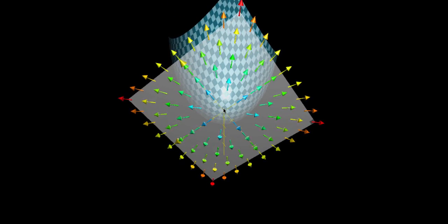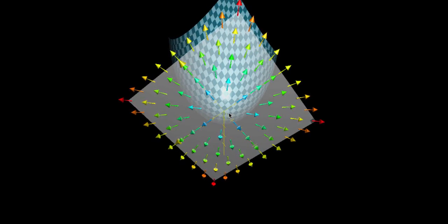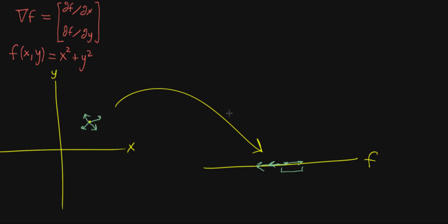This is why we call it the direction of steepest ascent. But back here, I don't see the connection immediately — or at least when I was first learning about it, it wasn't clear why this combination of partial derivatives has anything to do with choosing the best direction. Now that we've learned about the directional derivative, I can give you a little bit of an intuition.